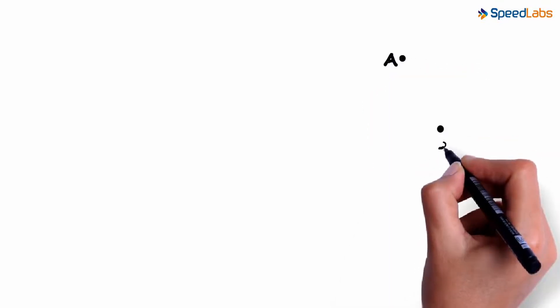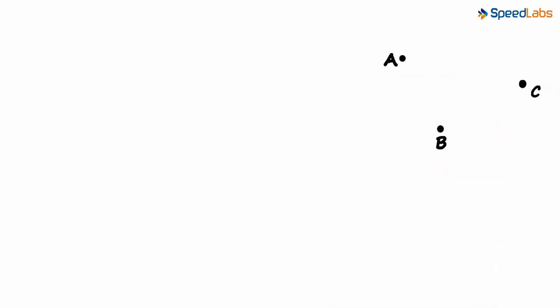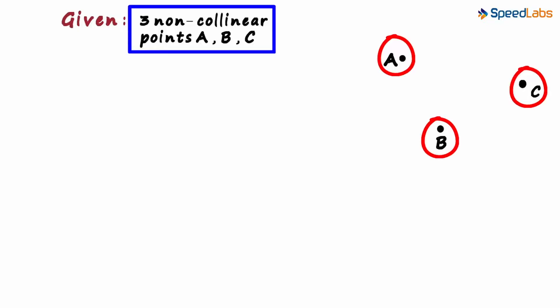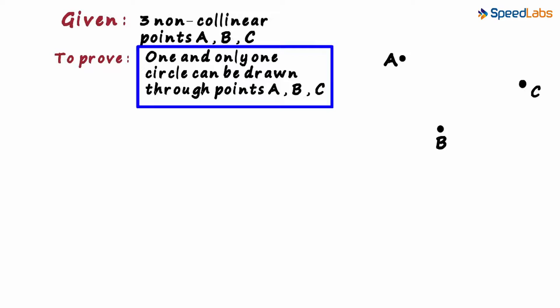Consider these three non-collinear points A, B and C. That is the data that has been given to us. These three points are non-collinear. And we have to prove that one and only one circle can be drawn through these three points.